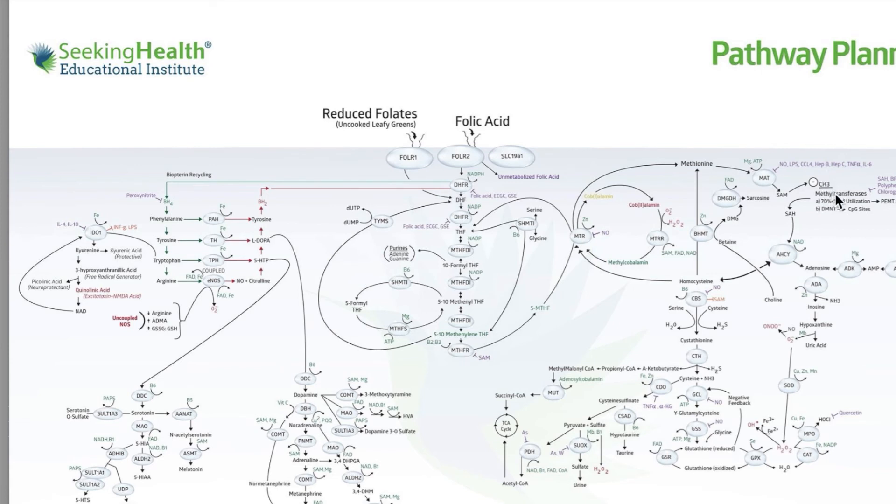So we can see we need these methyl groups for histamine N-methyltransferase, which breaks down histamine in the brain. And we also need methyl groups for the conversion of serotonin into melatonin.